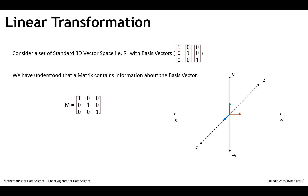We have understood that a matrix contains information about the basis vectors. So you have a matrix in front of you. The first column represents the i basis vector, the second column represents the j basis vector, and the third column represents the k basis vector. This is what we have understood in the previous videos. This matrix represents the coordinates of the basis vectors before transformation.